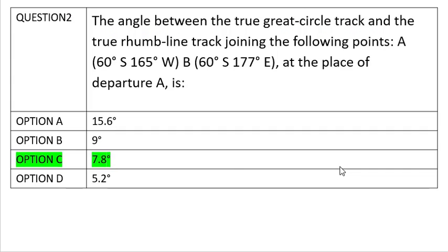Therefore, the answer to the question - that is, the angle that is made between the true great circle track and the true rhumb line track at point A - is Option C, which is 7.8 degrees.